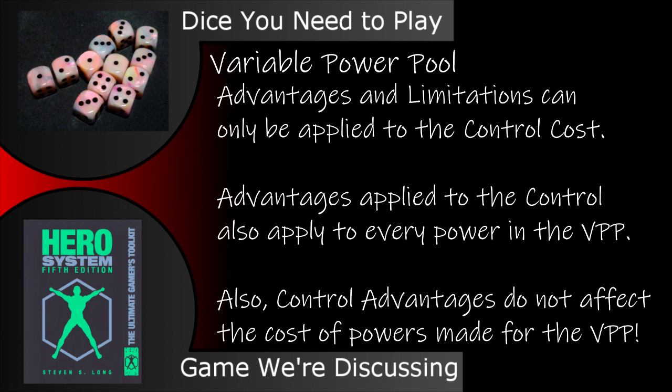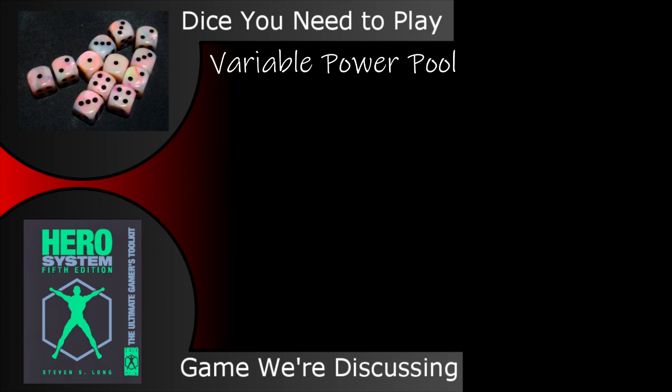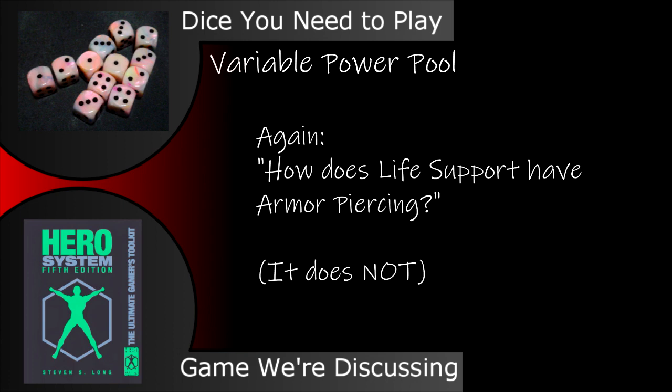Advantages can be applied to the control and they would affect every power in the pool, which can lead to some interesting effects. First, any power created using the variable power pool that has an advantage applied to the control automatically has that advantage. Second, the advantage applied to the control does not impact the cost of the power created using the pool. But this also creates some weird edge cases, just like with multi-power — for example, how does life support have the advantage armor piercing? The book then follows up with armor piercing having no effect on life support.